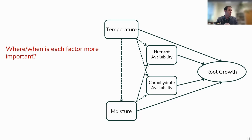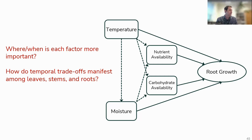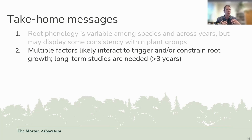When and where is each factor more important is a great question I'm excited to dig into, but it's really going to take a lot of people to figure out. A good place to start is just looking at the temporal trade-offs between our major growth sinks across the season: the production of leaves, the expansion of stem or woody tissues, and the production of fine roots.